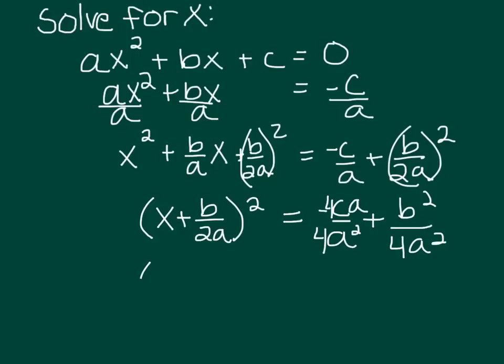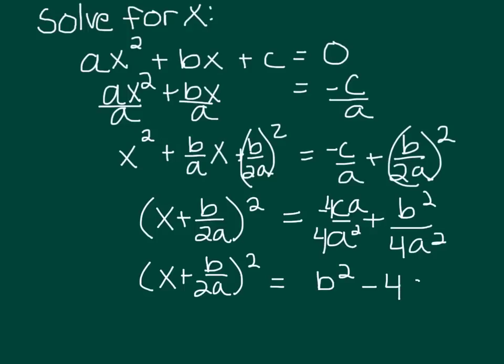So now I've got (x + b/2a)² equals, and then we have minus 4ca plus b². I want to put the b² part first and then say minus 4ac, all over 4a².